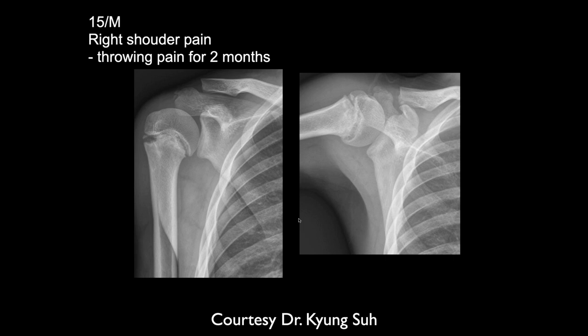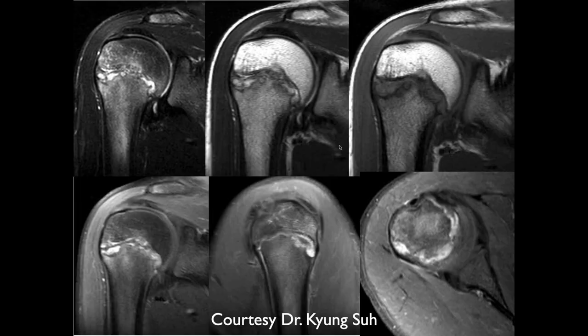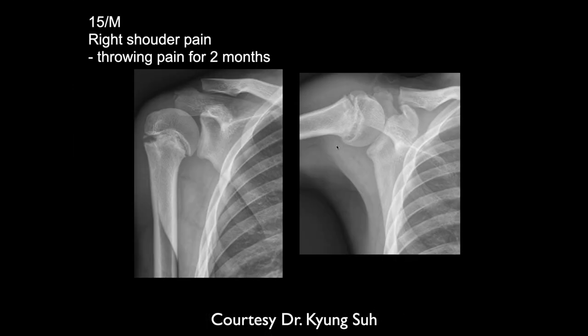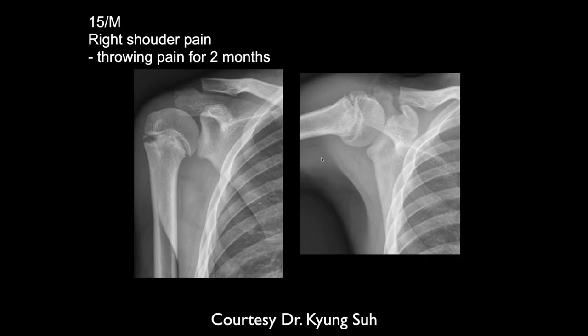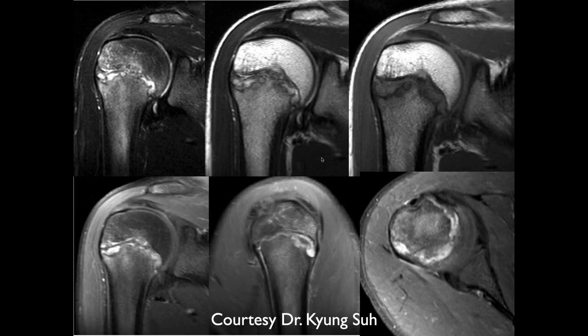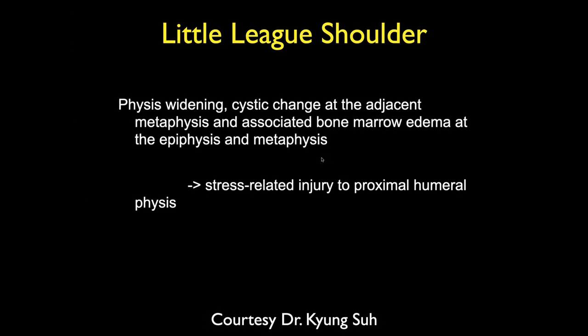This is a 15-year-old male with right shoulder pain and throwing pain for two months. There is diastasis at the growth plate, some fragmentation and irregularity, and also some displacement — it's in varus with some rotation. On MR there's quite a bit of fluid and separation.